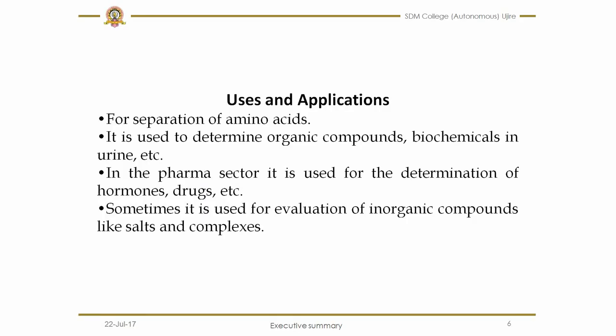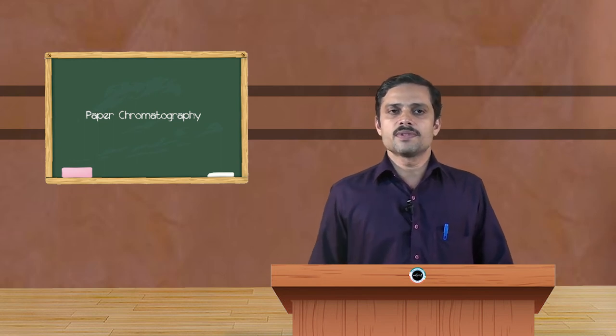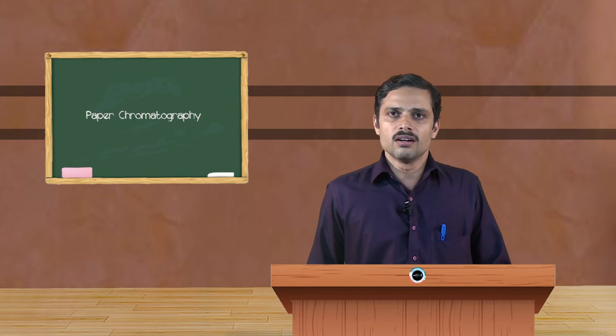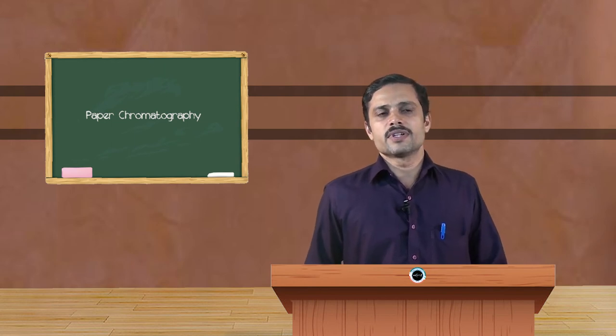It finds many applications. Mainly this paper chromatography, because it is very cheap compared to other chromatographic techniques. It is very cheap and time required is very, very less, within minutes it can be done. Therefore, it is used for the separation of amino acids mainly. It can also be used to determine organic compounds, biochemicals in urine sample especially. In the pharma sector, it is used for determination of hormones, drugs. Sometimes it can be used in the evaluation of inorganic compounds like salts and complexes. Also, it is used in research laboratories because the ease with which you can carry out this technique is very easy and it is very cheap.